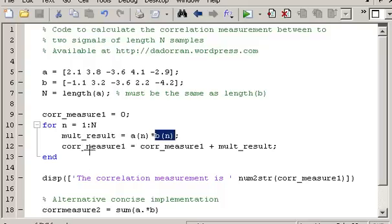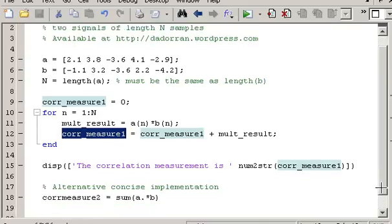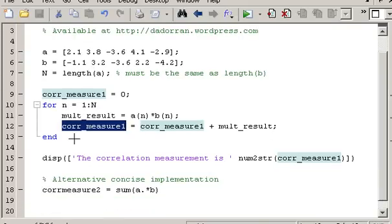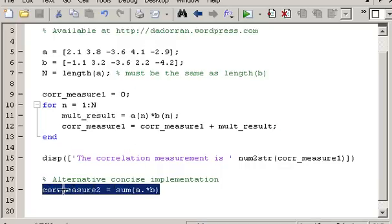And after each iteration, this core measure 1 variable is increasing as we go through the loop to give us a final result of our correlation measurement. So you can go through that code in your own time. It probably more closely matches the expression for correlation than this one down here. But this line down here is effectively the same thing done nice and concisely in MATLAB.